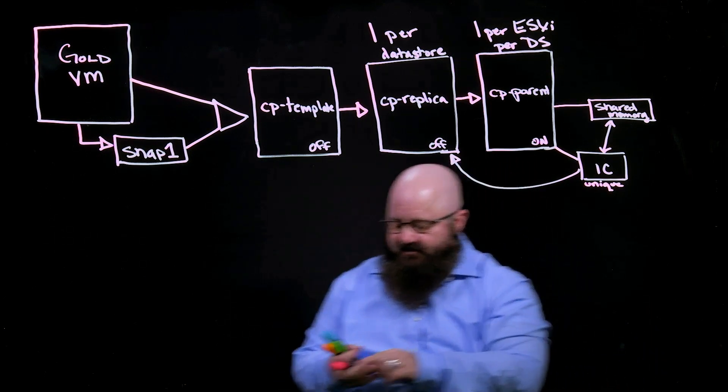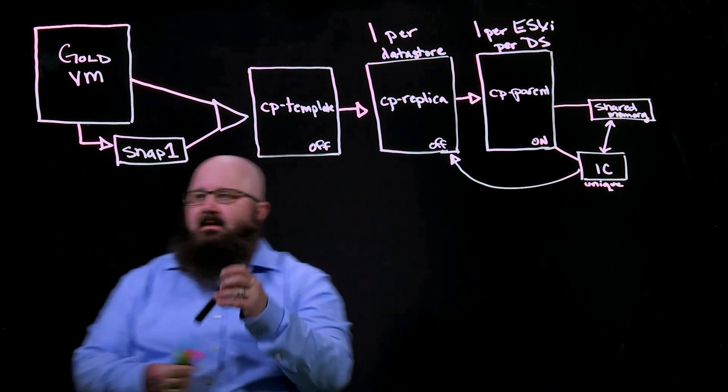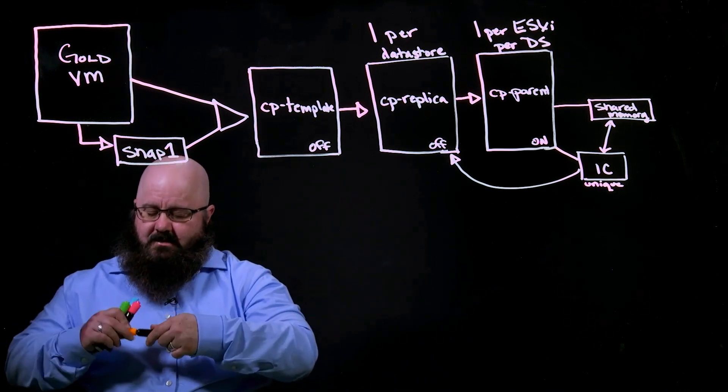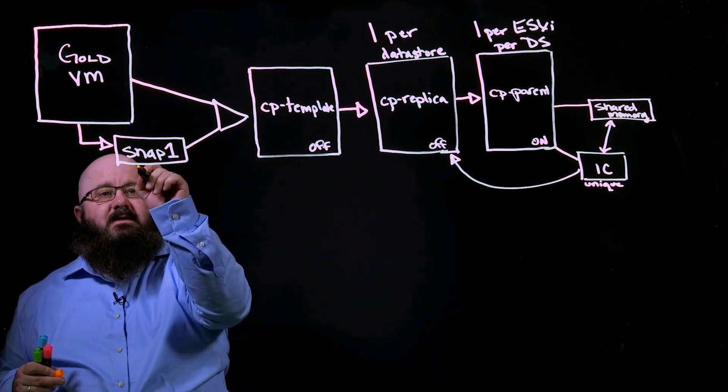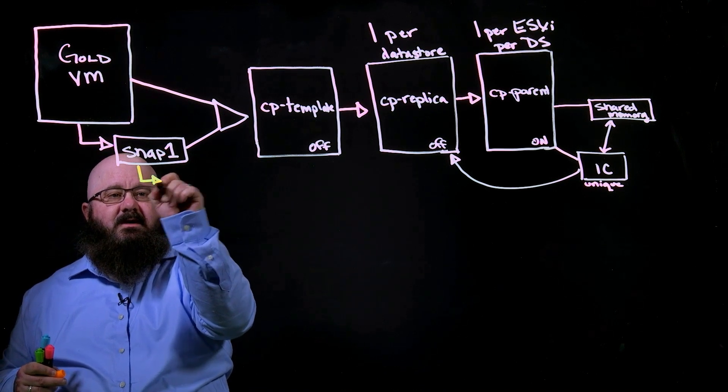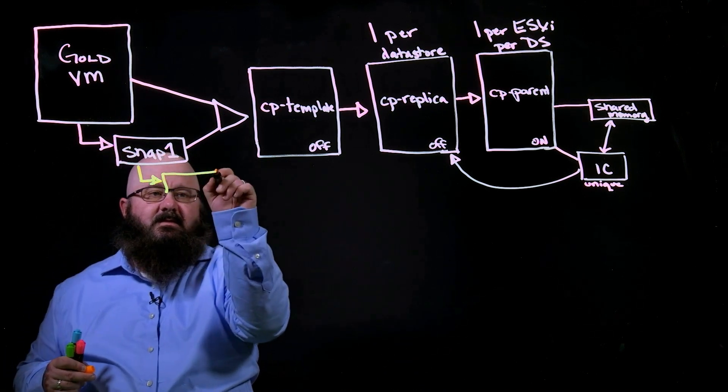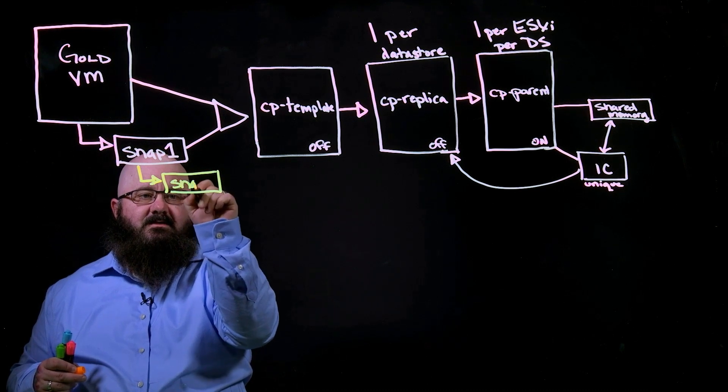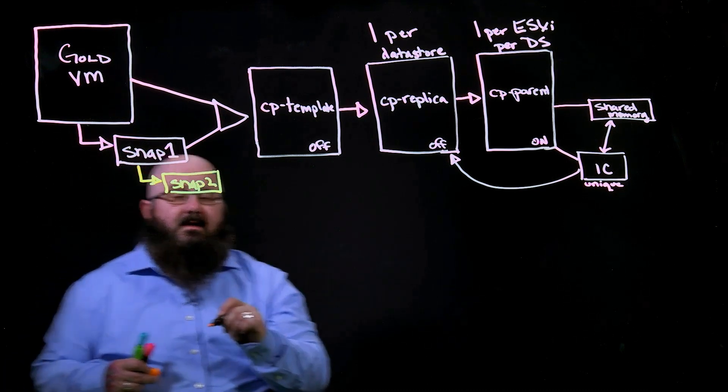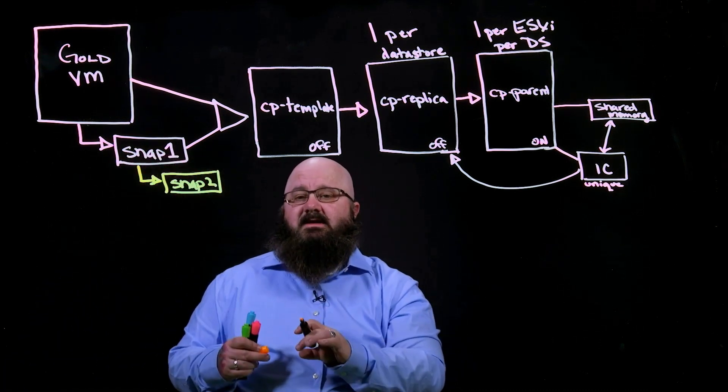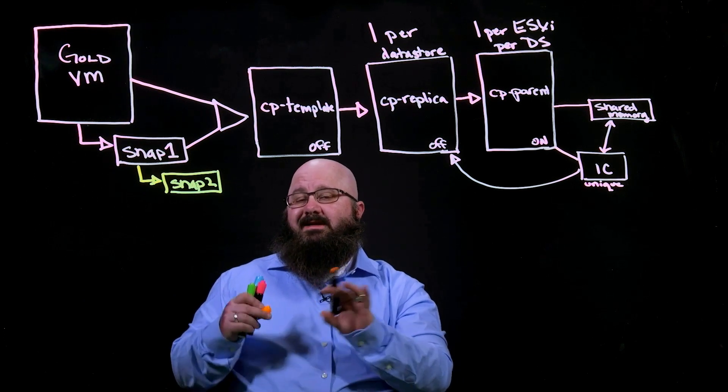So I power on my gold VM. And with this one here, I create a new snapshot. I go through the same process. And then I tell the instant clone engine, I say, hey, I want to push an update.